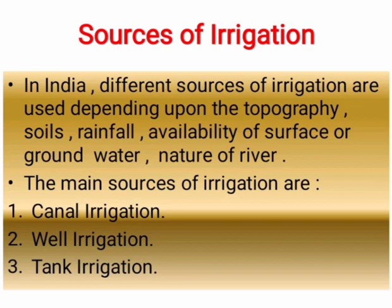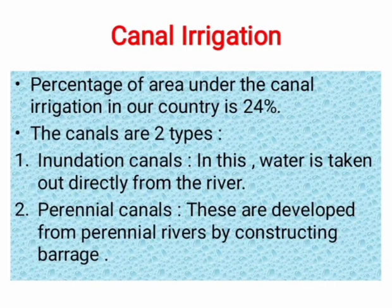Inundation canals: in this, water is taken out directly from the rivers. The next one is perennial canals. These are developed from perennial rivers by constructing a barrage to regulate the flow of water. Perennial refers to canals which do not dry.